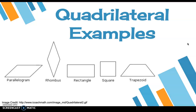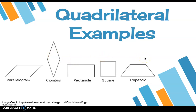So let's take a look at the quadrilaterals you'll be learning about. The first one is a parallelogram — it's kind of fun to say, isn't it? Then there's the rhombus, rectangle, square, and trapezoid. These shapes may be familiar or new to you, and that's okay. You're going to watch a short video to learn more about the attributes of these quadrilaterals.